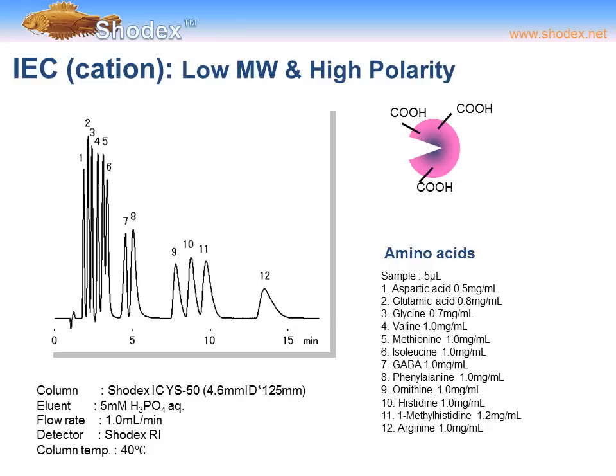Using cationic ion exchange mode to separate low molecular weight, high polarity compounds: amino acids are ideal since they are very low molecular weight and tend to be high polarity. The separation includes 12 compounds such as isoleucine, aspartic acid, glutamic acid, glycine, histidine, and arginine, among others. The separation was accomplished with an ICYS50 column, 4.6 mm ID, 125 mm length, using a 5 mM phosphate buffer aqueous eluent at 1 mL/min, with an RI detector, at 40°C.